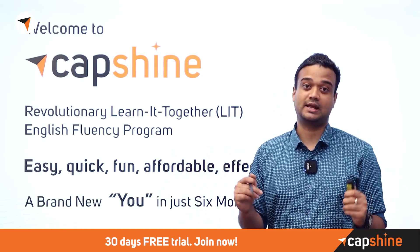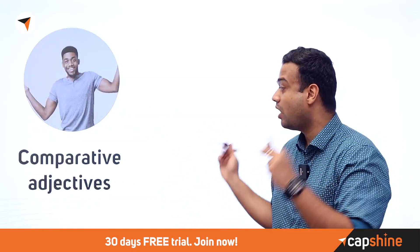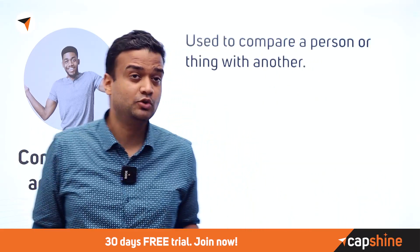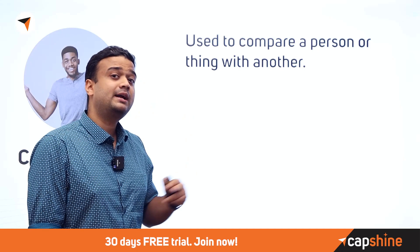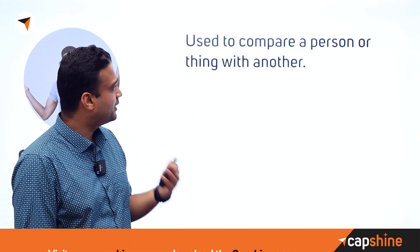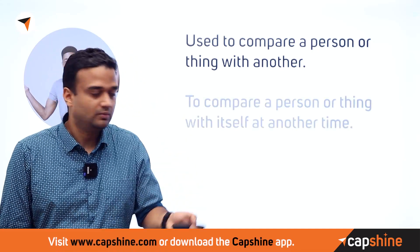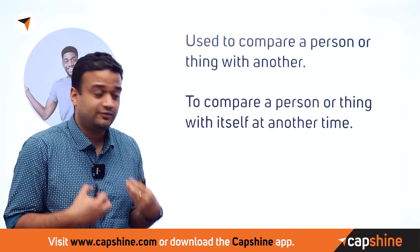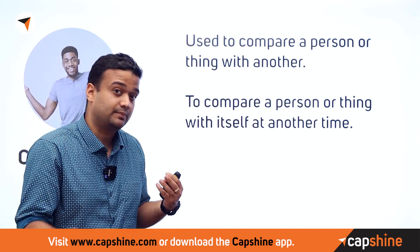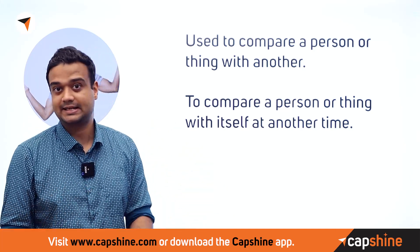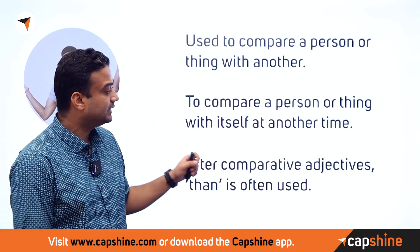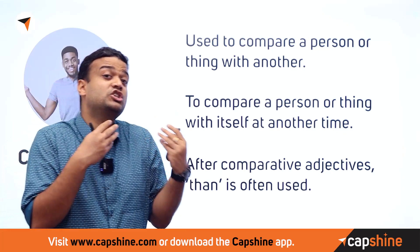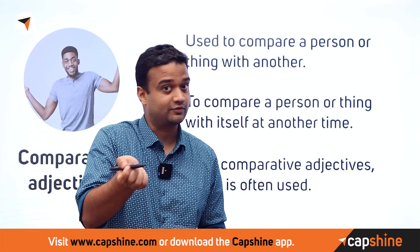So where do you use comparative adjectives? Firstly, they are used to compare a person or a thing with another. They are also used to compare a person or thing with itself at another time — for example, how I was 10 years back versus now. After comparative adjectives, 'than' is often used: 'I am richer than I was 10 years back.'